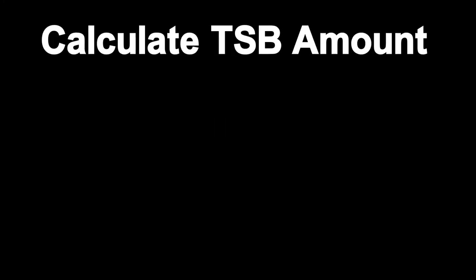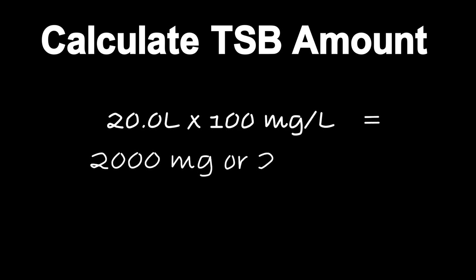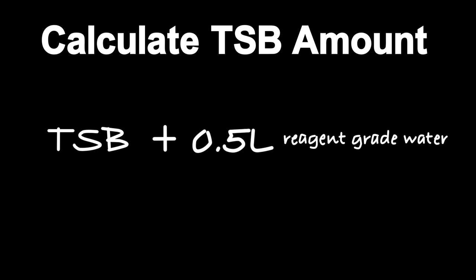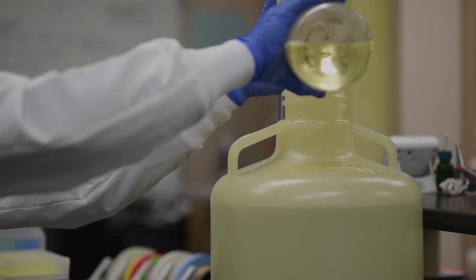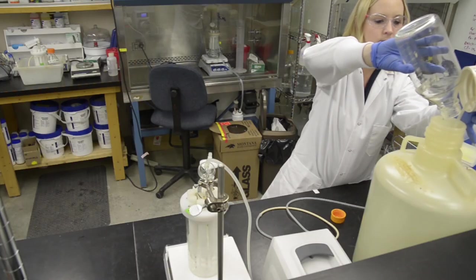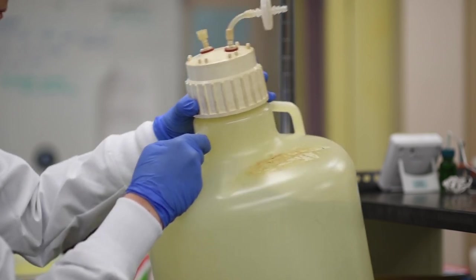To calculate the amount of TSB needed, add 0.5 liter to the carboy volume. Multiply the volume by 100 milligrams per liter. Add the appropriate amount of TSB to a glass bottle, along with 0.5 liters reagent-grade water, and sterilize appropriately. Aseptically, add the sterile continuous flow TSB concentrate to the carboy, and swirl to mix.